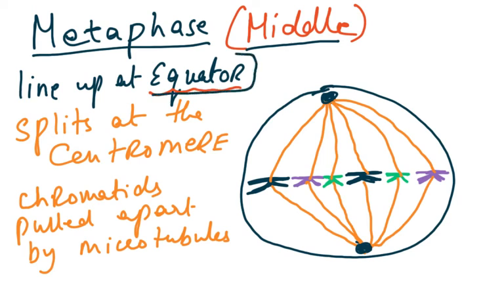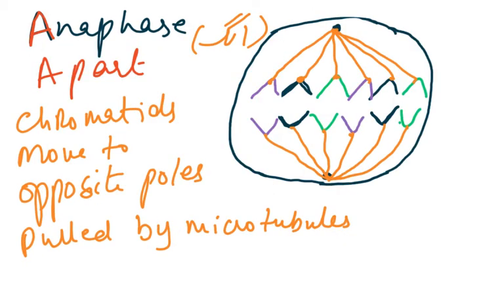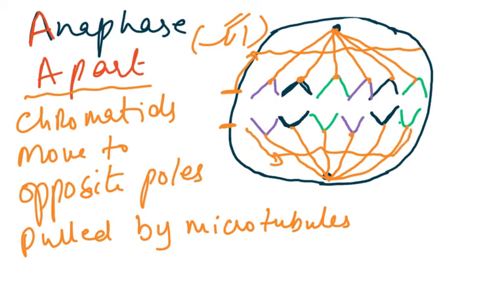In anaphase, the chromatids are now separated — the centromeres split and the chromatids move to opposite poles. The sister chromatids are no longer sisters; they are now individual chromosomes moving to opposite poles. This is early anaphase moving into late anaphase as they travel toward the poles.